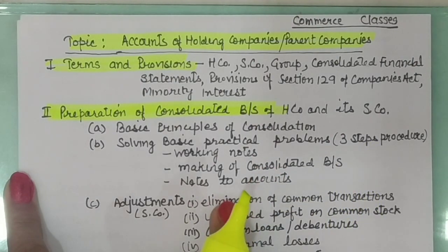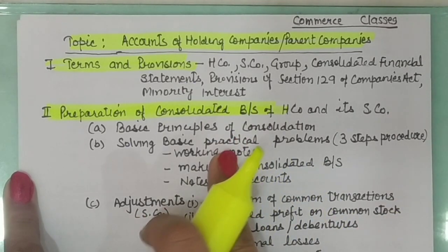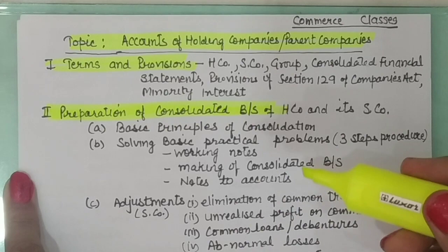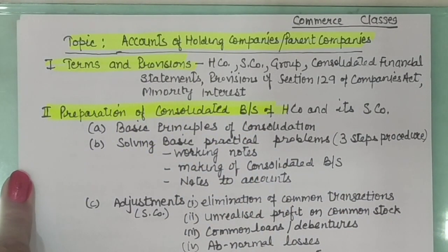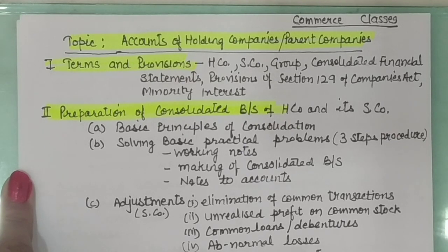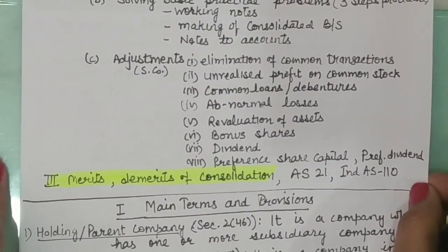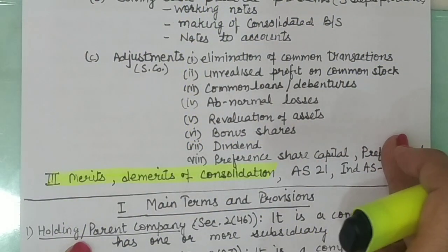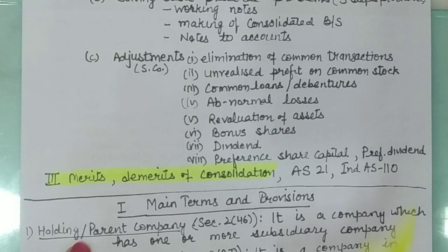Once simple consolidation problems are clear, adjustments are introduced. There are eight adjustments in all — elimination of common transactions, unrealized profit, common stock, bonus shares, and so on. After the practical part, we are in a better position to appreciate the merits and demerits of consolidation. Consolidation is guided by Accounting Standard 21 and Accounting Standard 110, and relevant provisions of these standards will be studied in the third part.